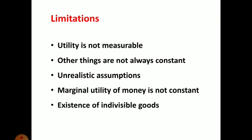Another limitation is the existence of indivisible goods. The law cannot be applied in the case of bulky goods like television sets, refrigerators, vehicles, houses, and cars. You cannot apply this law to the consumption of a television, for example, because people don't buy such large goods one after another. The law is not applicable in the case of large, bulky goods which cannot be divided into smaller parts. These are some of the limitations of the law of diminishing marginal utility.